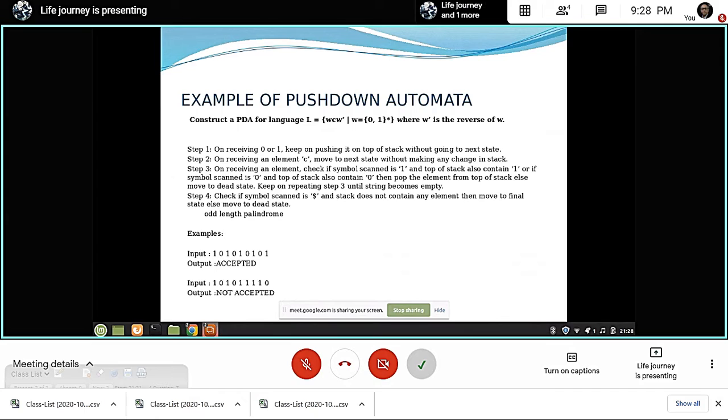Step three, on receiving an element, check if symbol scanned is one and top of the stack also contains one, or if symbol scanned is zero and top of the stack also contains zero, then pop the element from the top of the stack, else move to the dead state. Step four, check if symbol scanned is dollar and stack does not contain any element, then move to the final state, else move to the dead state.